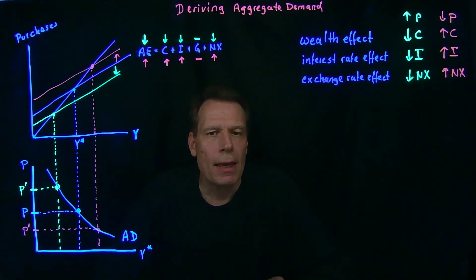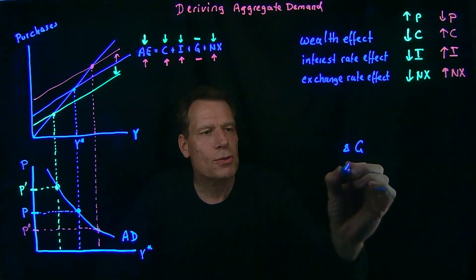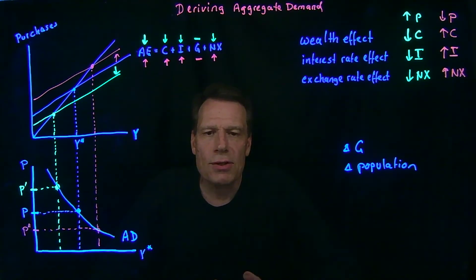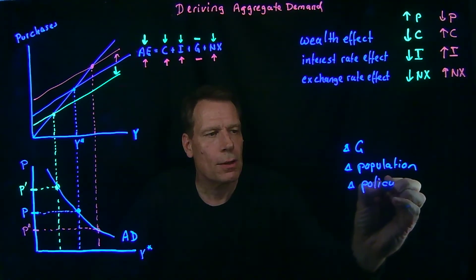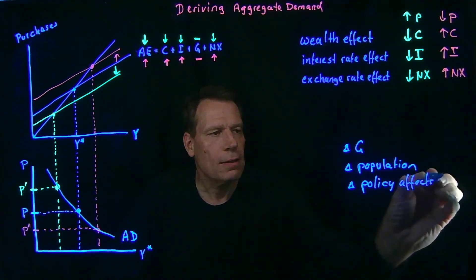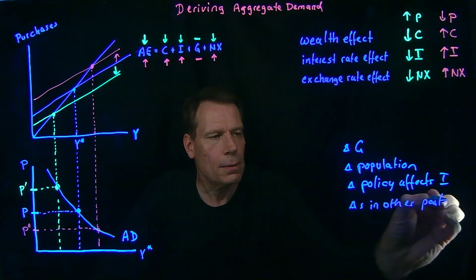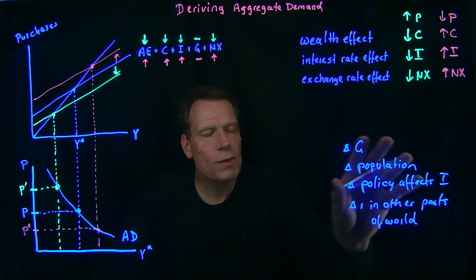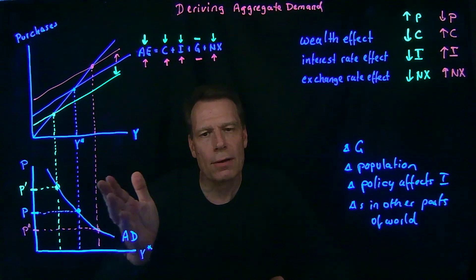Or you could think of an increase in immigration that boosts the population, or a change in policy — perhaps tax policy — that makes investments more or less attractive and therefore affects investment. Or we could think about changes in other economies around the world that might affect exports or imports. All of these are changes other than a change in the price level, so rather than causing movement along the aggregate demand curve, they will cause that aggregate demand curve to shift.